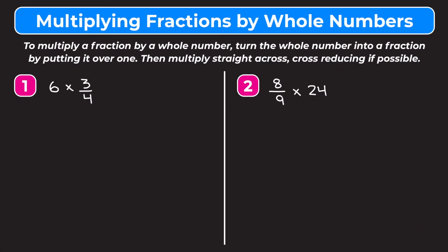In this video we're learning how to multiply fractions by whole numbers. At the top of the screen we see some tips: to multiply a fraction by a whole number, turn the whole number into a fraction by putting it over one, then multiply straight across, cross reducing if possible. I'll show you how to do that starting with example one.